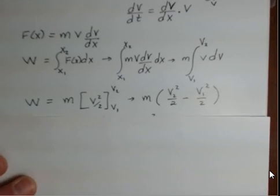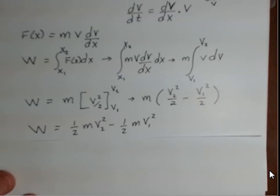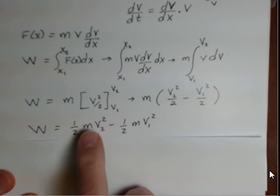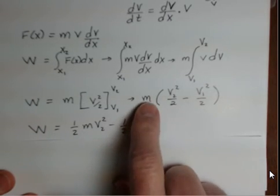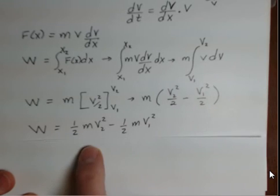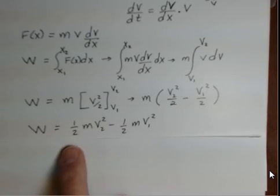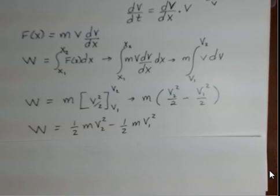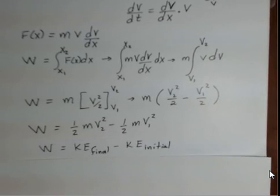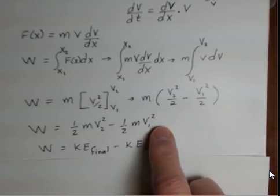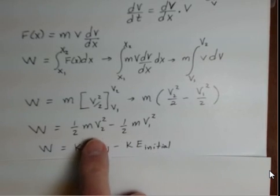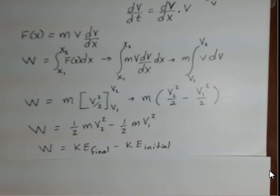And you can see there's a factor of a half that can be applied here and distribute m through the parentheses. We end up with the expression that the work done on the object is equal to the final kinetic energy minus the initial kinetic energy. v2 is the final velocity, v1 is the initial velocity.